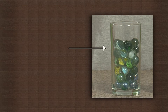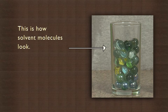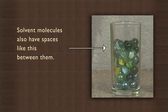This glass is filled with small pieces of marbles right up to the top — this is how solvent molecules look. You will see that there are spaces between the marbles. Solvent molecules also have spaces like this between them.